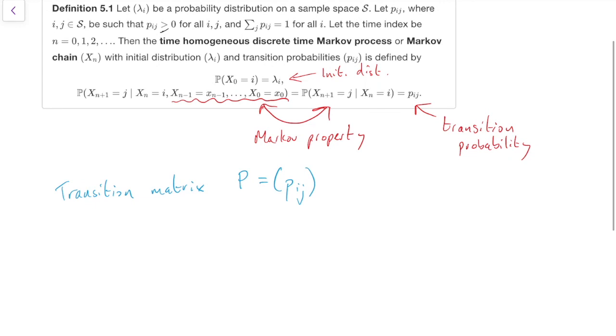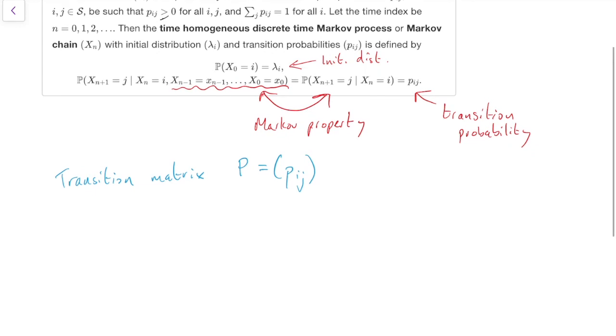So, for example, let's suppose we wanted to know, for a Markov chain, what is the probability that x0 equals i and x1 equals j? Well, let's think.